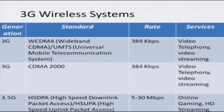3.5G further improves the data rate. This is known as HSDPA, High Speed Downlink Packet Access, and HSUPA, High Speed Uplink Packet Access, which support data rates up to 30 megabits per second. They allow a richer set of services such as online gaming, high definition video, video streaming, and streaming on demand.